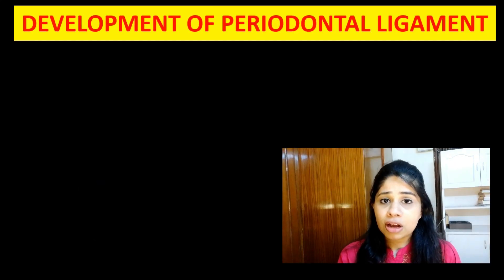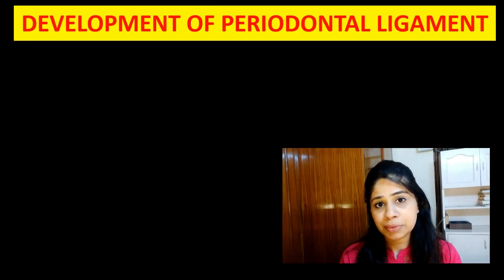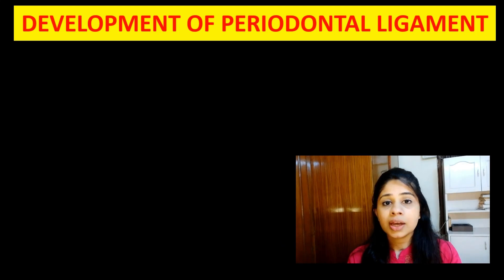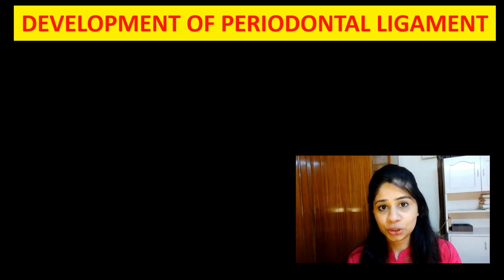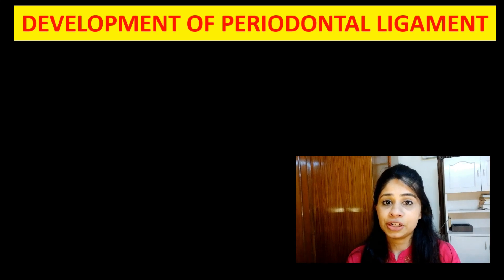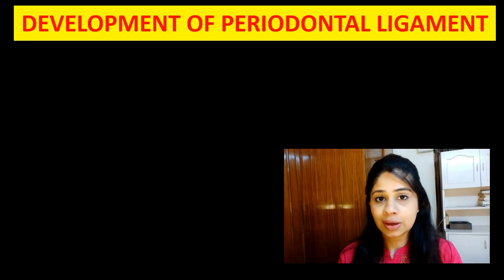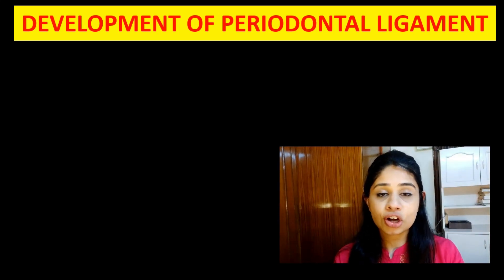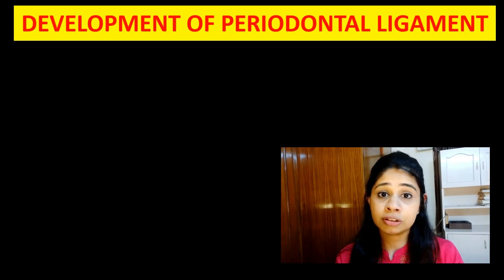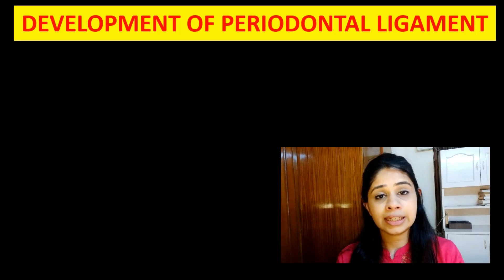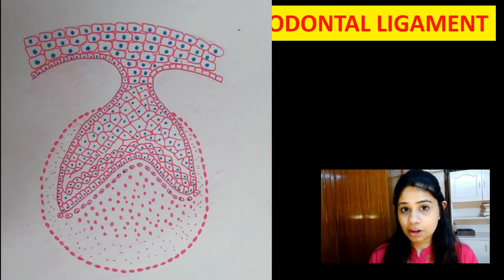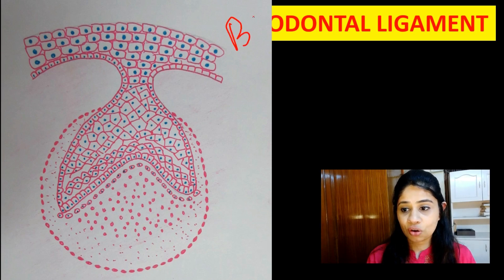Now let's talk about the development of the periodontal ligament, which is part of the overall development of the tooth. The periodontal ligament fibers develop during root formation, and this occurs prior to the teeth erupting into the oral cavity. This histological picture shows the bell stage of tooth development.